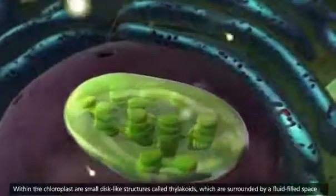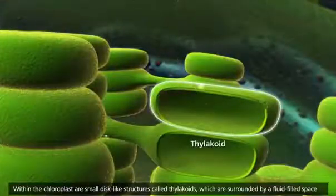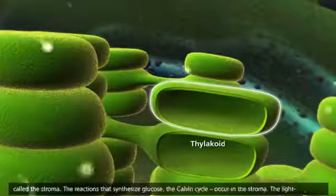Within the chloroplast are small disc-like structures called thylakoids, which are surrounded by a fluid-filled space called the stroma.